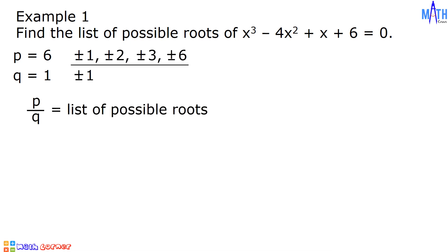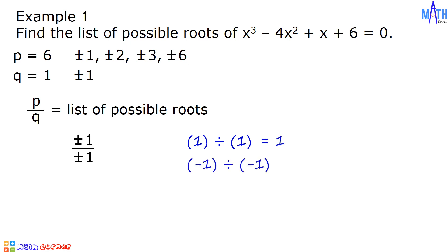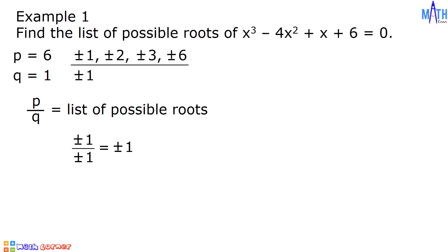We have positive and negative 1 divided by positive and negative 1. If we divide like signs, the answer is positive; if we divide unlike signs, the answer is negative. Positive 1 divided by positive 1 equals positive 1, negative 1 divided by negative 1 equals positive 1, and positive 1 divided by negative 1 equals negative 1. So we have positive and negative 1.